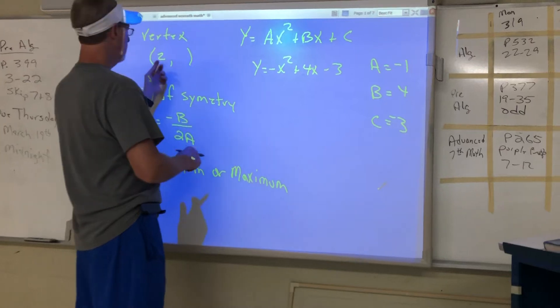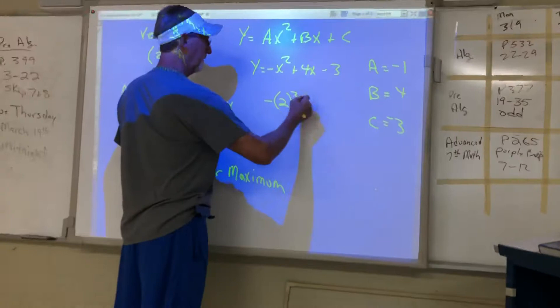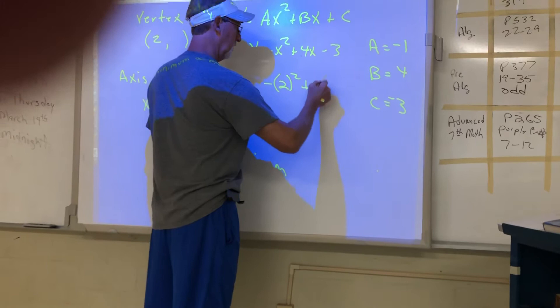Okay, we're plugging in the x value to find the y value on the vertex. So we have 2 in place of x squared, and we have 4 times 2, and then minus 3.